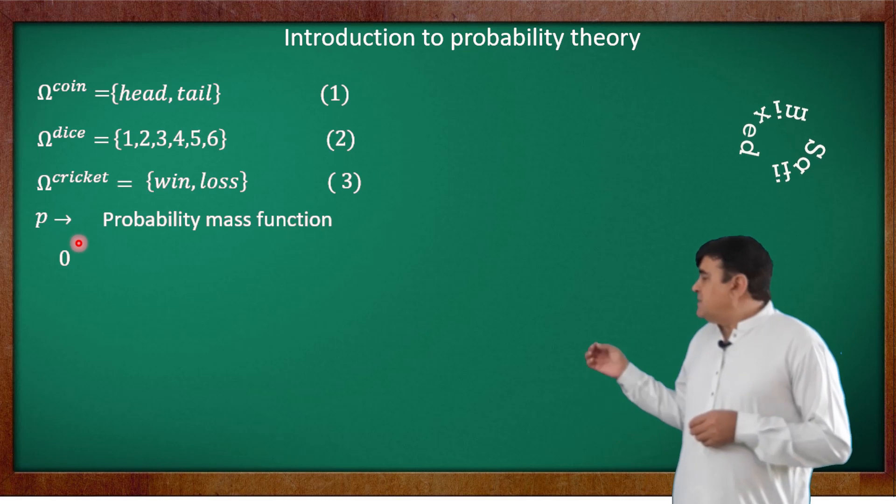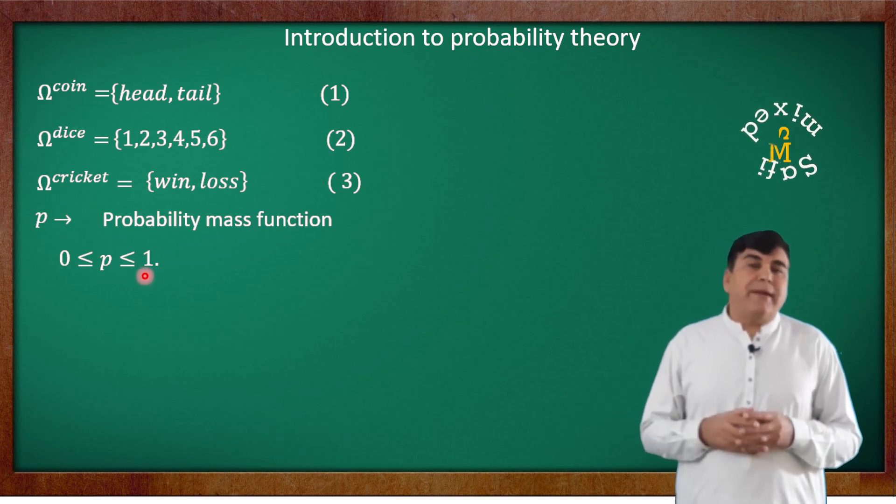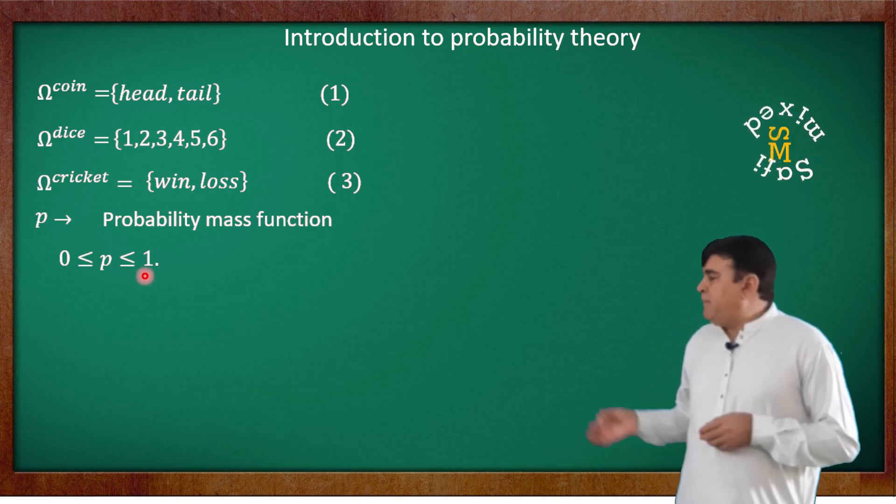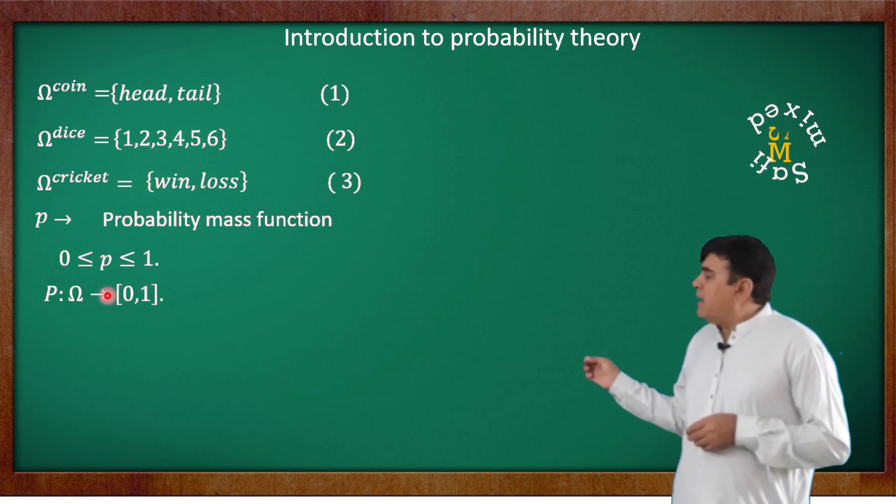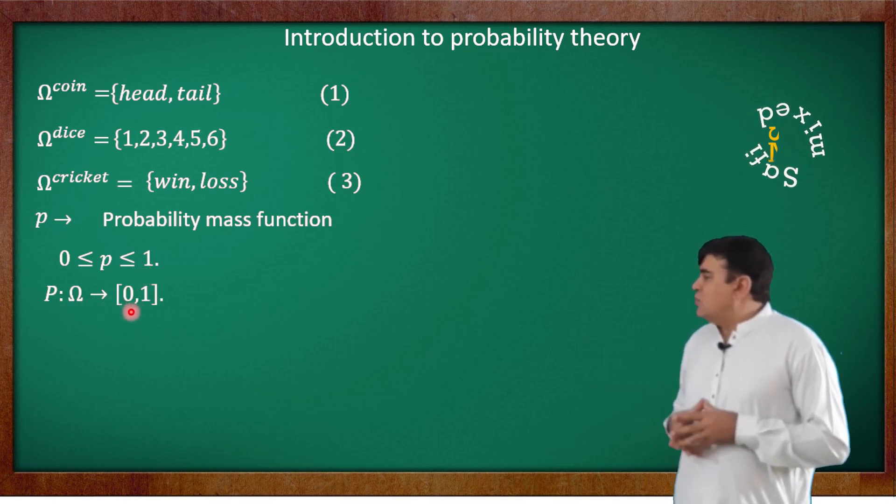That is, 0 less than or equal to P and P less than or equal to 1, and is usually written in the form P colon Omega arrowhead and the number enclosed inside the square brackets.